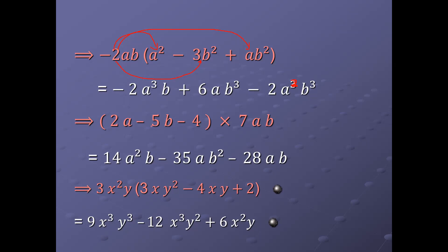The bracket is a trinomial expression with three terms. Four is a constant term — a term with no algebraic factor is called an absolute term. The expression is 2a minus 5b minus 4, multiplied by 7ab. Multiply the monomial 7ab with each term: 7ab times 2a equals 14a²b. Then 7 times negative 5 equals negative 35, and b times b equals b², giving negative 35ab². Then 7 times negative 4 equals negative 28, giving negative 28ab.